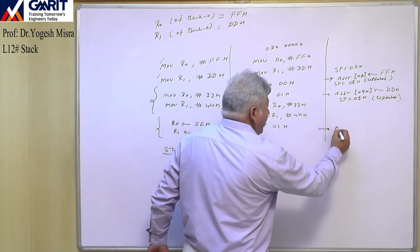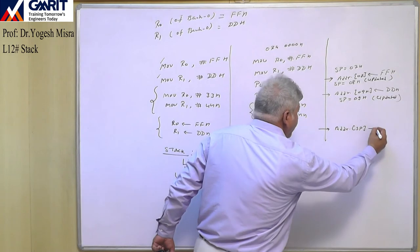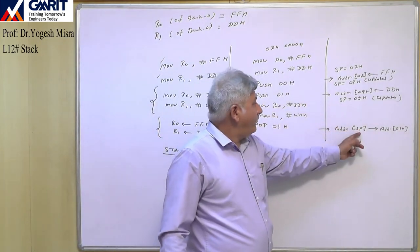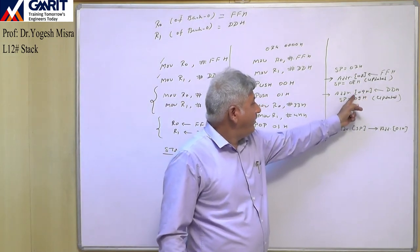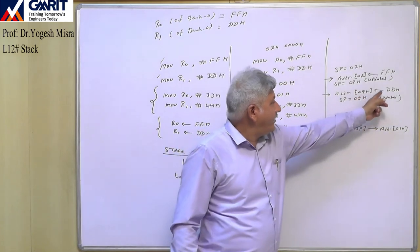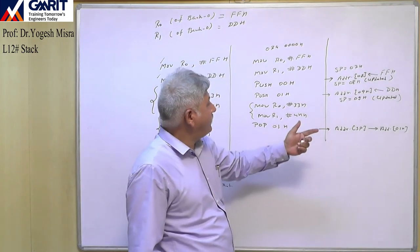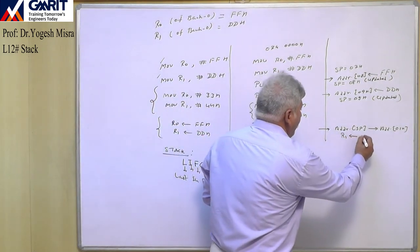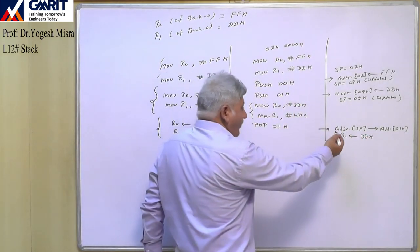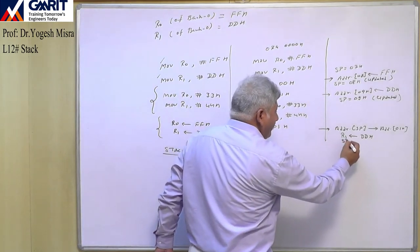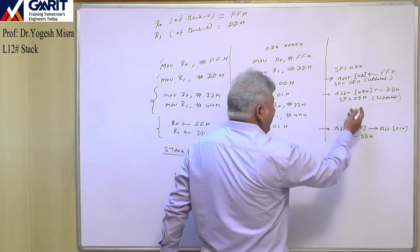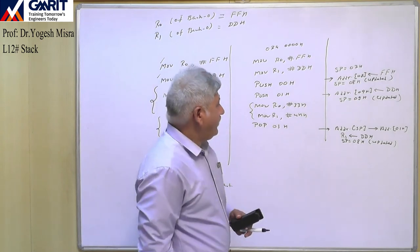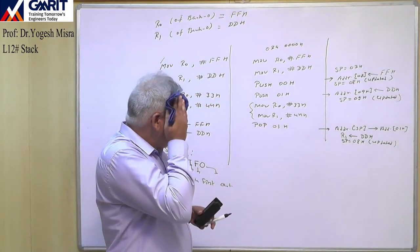So DD will be transferred to memory location 01H, which is the address of R1. R1 now gets DDH. After this transfer, SP becomes SP−1 = 08H. We have retrieved one data value in R1 register.